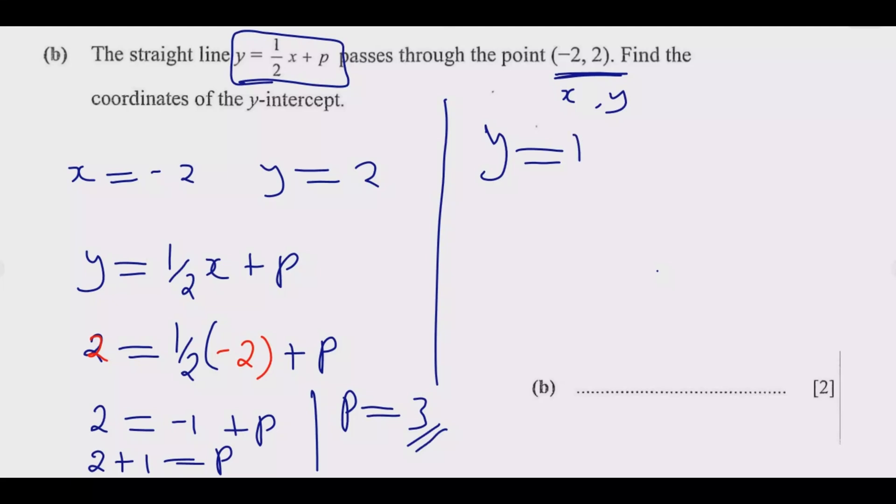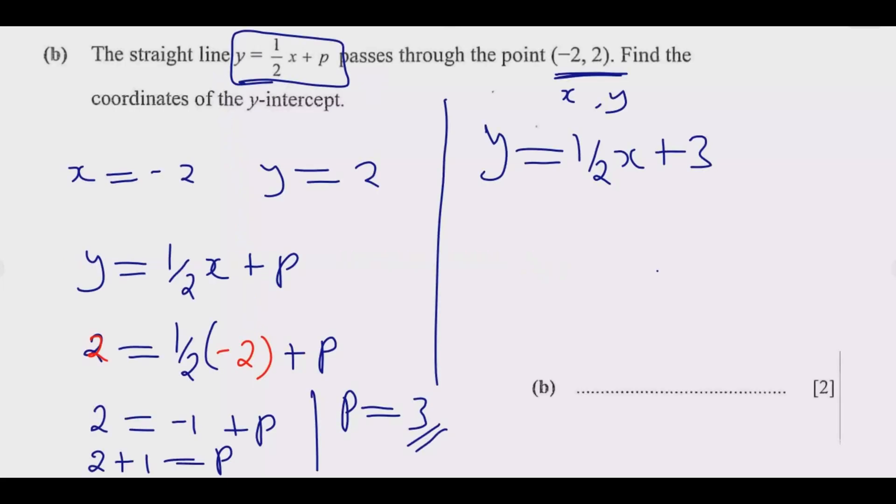That's the equation. Now if that's the equation, we are looking for the y-intercept of this equation. So when you're talking about the y-intercept, this equation has a positive gradient, so when x = 0, which is the y-intercept...